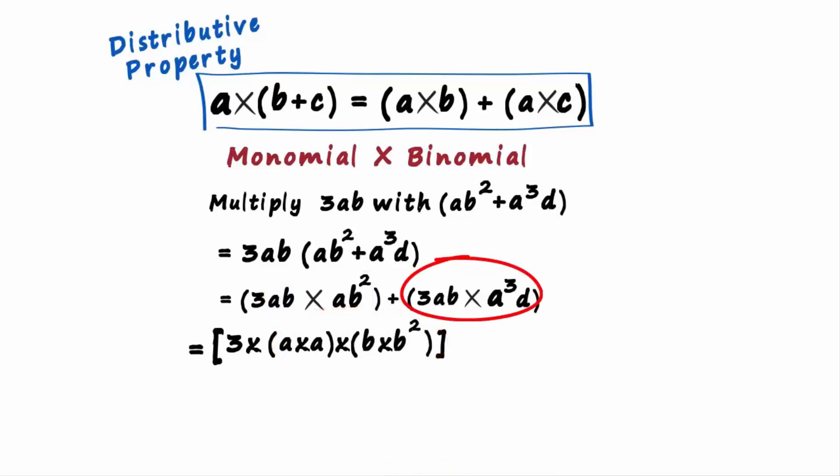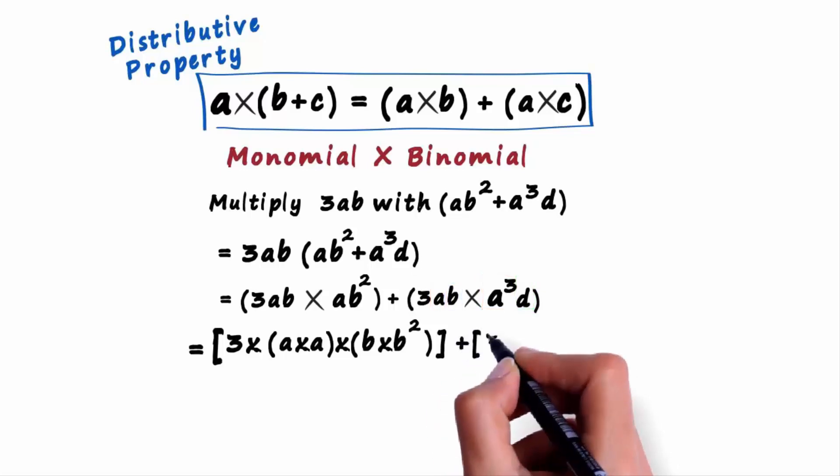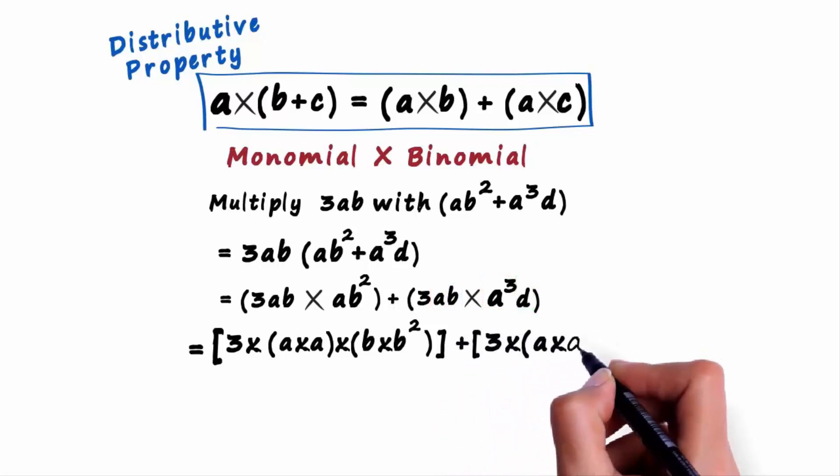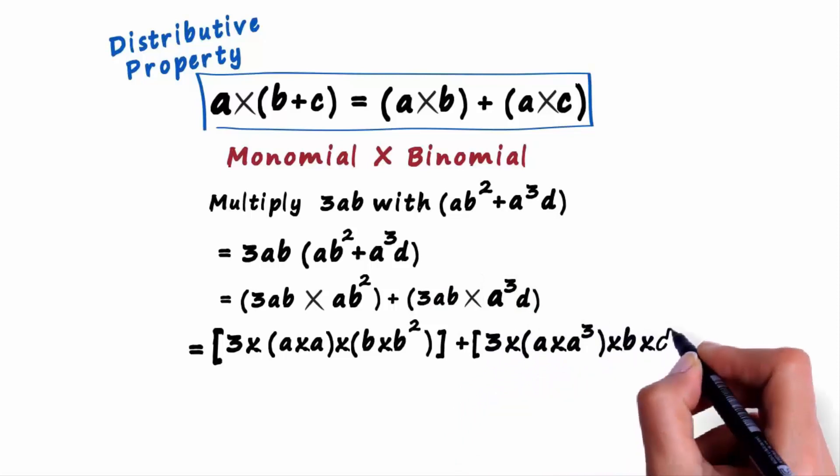A is a common variable to both, and we have b and d in each. That's why we write this as 3 times a multiplied by a cubed, multiplied by b multiplied by d.